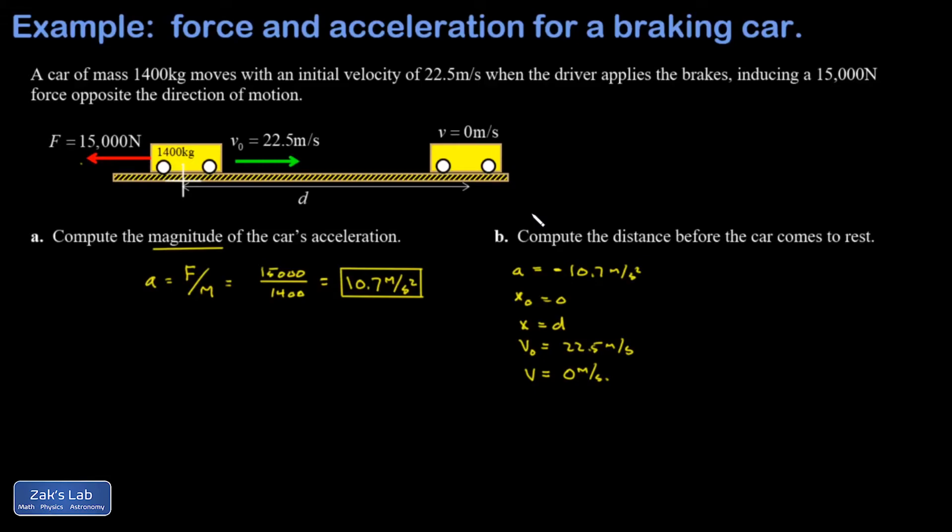plug that time into the position formula for the x coordinate. That's not the most efficient way to do it because I don't even need to find the time. So the third kinematics equation is the one that's time independent and that'll be the fastest way to get an answer here. So my final velocity is zero.